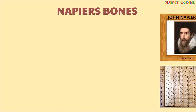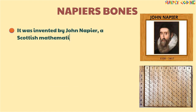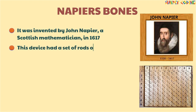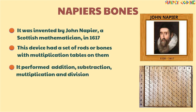Next came Napier's Bones. It was invented by John Napier, a Scottish mathematician, in 1617. The device had a set of rods or bones with multiplication tables on them. It performed addition, subtraction, multiplication, and division.